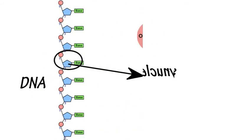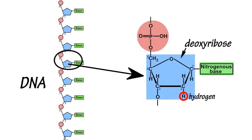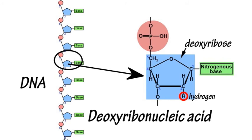When the sugar part of the backbone is deoxyribose, the polynucleotide is DNA, or deoxyribonucleic acid.